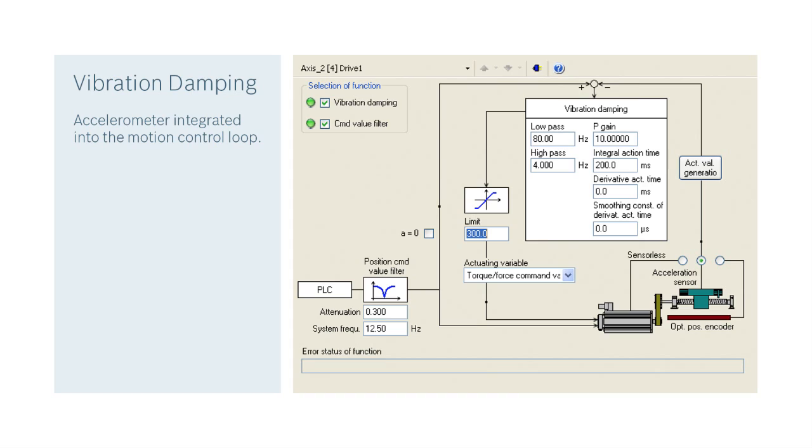The disturbance is measured by an accelerometer that is integrated into the motion control loop through the analog drive input and uses an additive position command to reduce or eliminate vibration of the tooling.